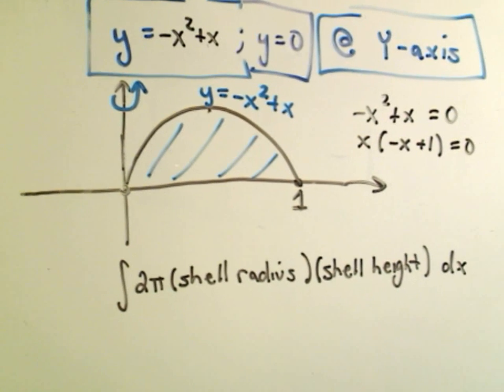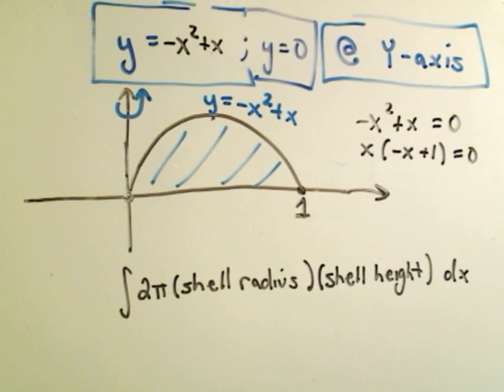The formula I like to think about when I use shells is I think about it being 2 pi times the shell radius and the shell height.